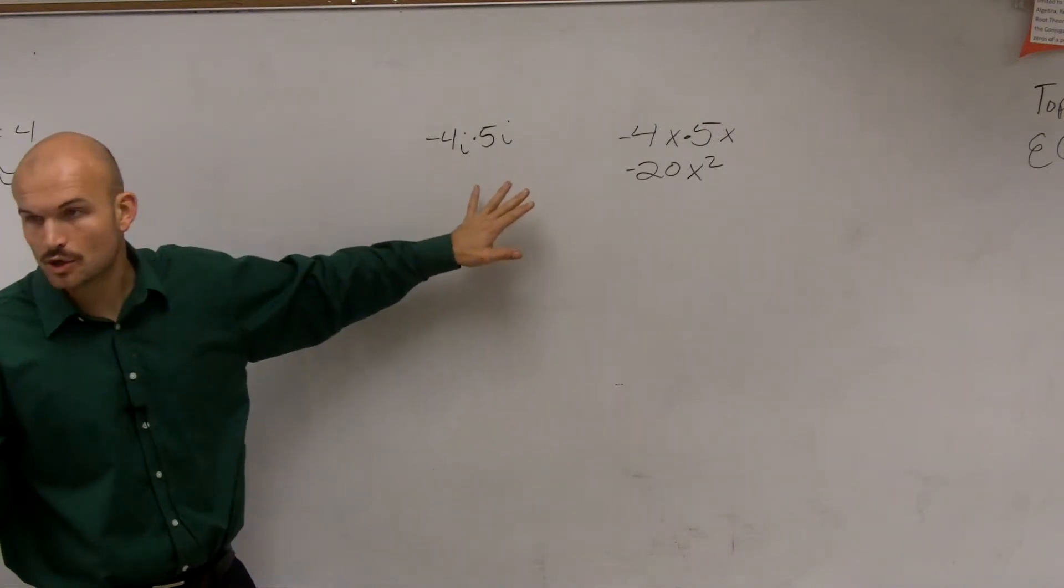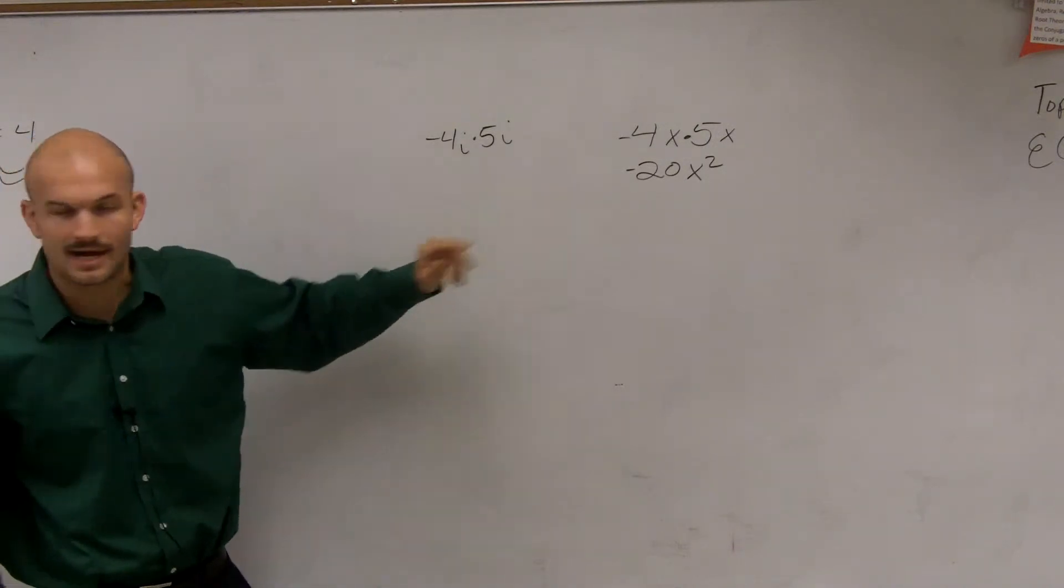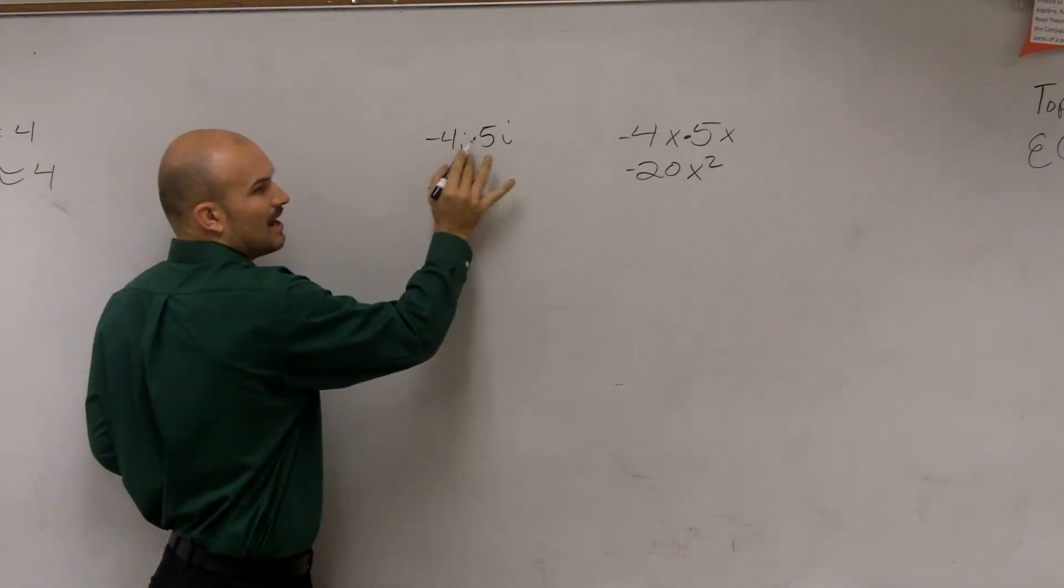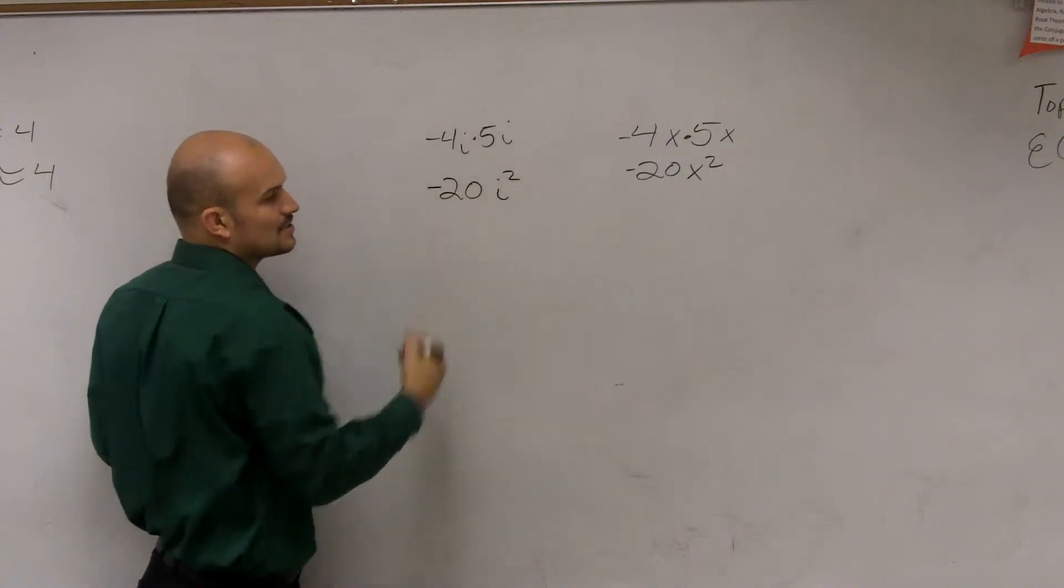We're going to make sure we multiply the coefficients of our imaginary i. So I have negative 4 times 5 is negative 20. Then I have i times i is i squared.